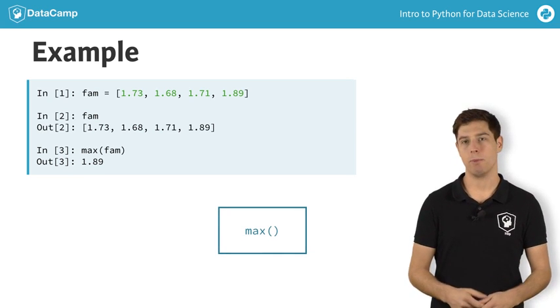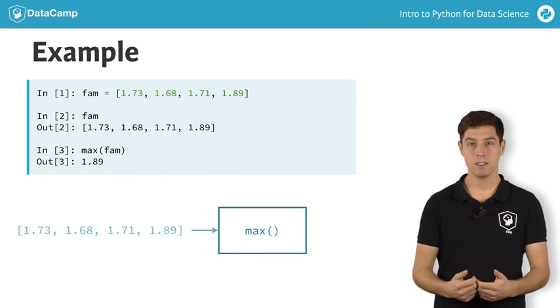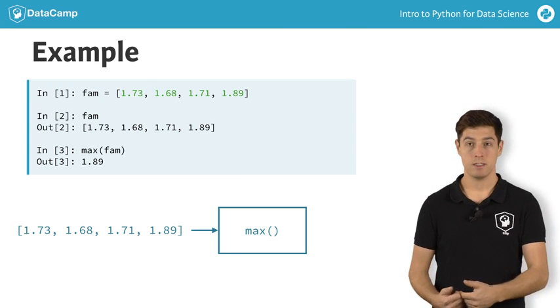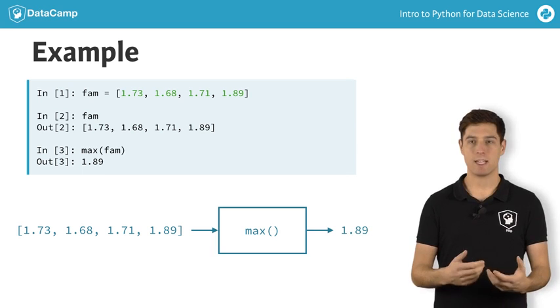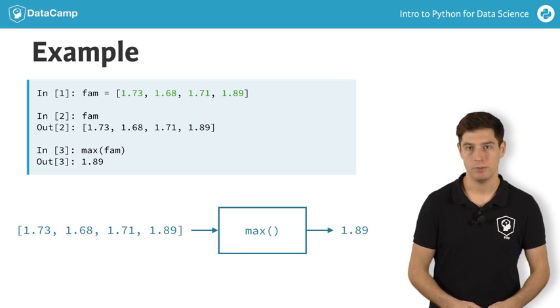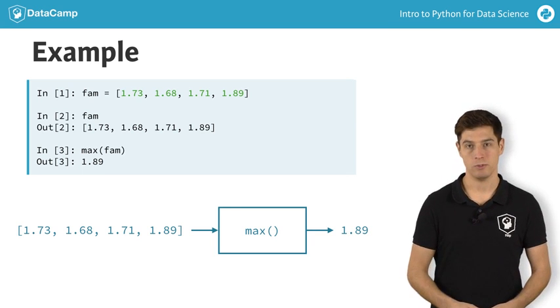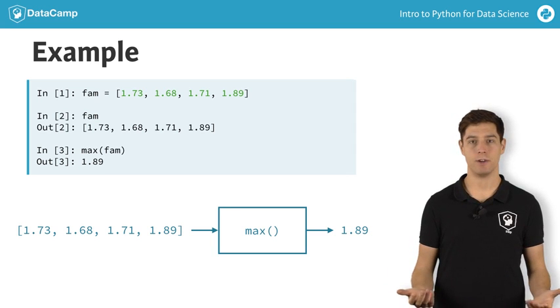Max worked kind of like a black box here. You passed it a list, then the implementation of max that you don't know did its magic and produced an output. How max actually did this is not important to you. It just does what it's supposed to. And you didn't have to write your own code, which made your life easier.